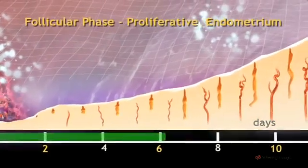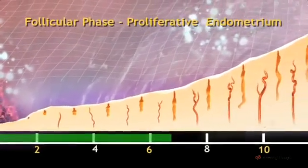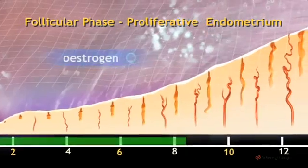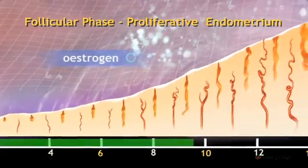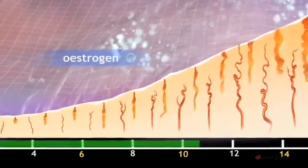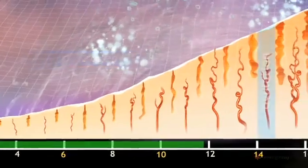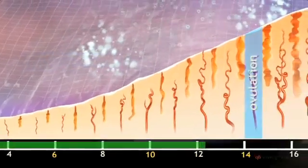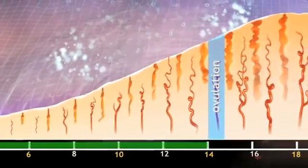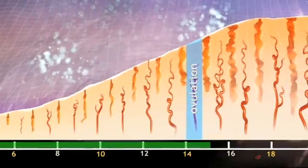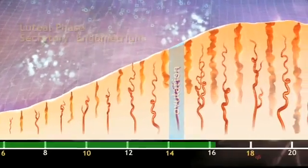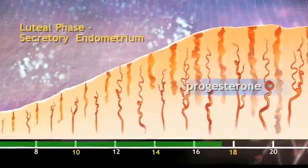In the first half of the cycle, known as the follicular phase, the developing follicle secretes increasing amounts of oestrogen hormone, which encourages regeneration of the endometrium. After ovulation, there are important changes in the endometrium, aimed at making it suitable to receive a fertilised egg.